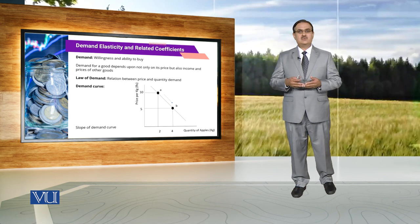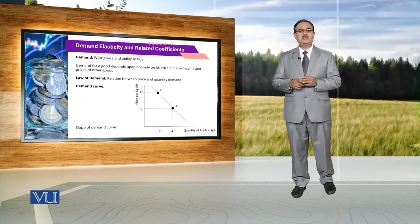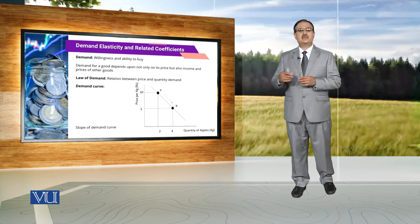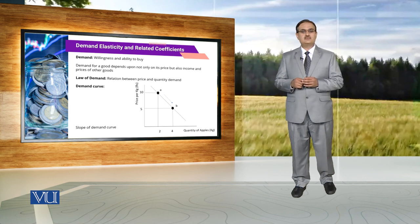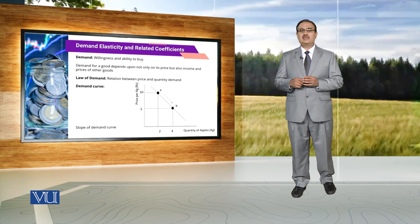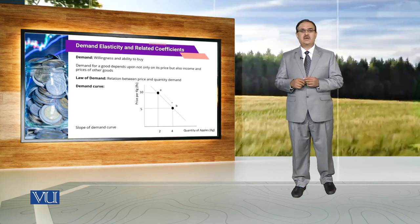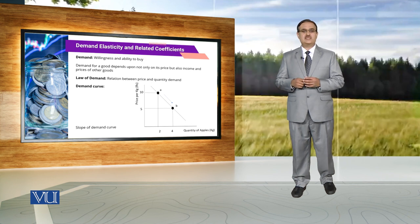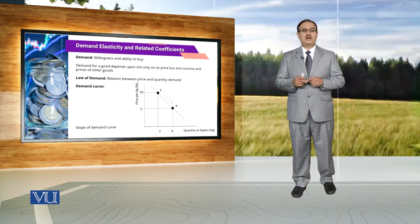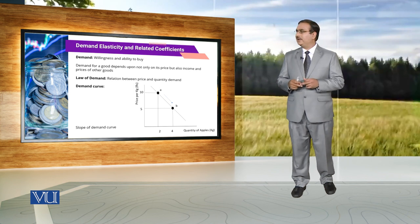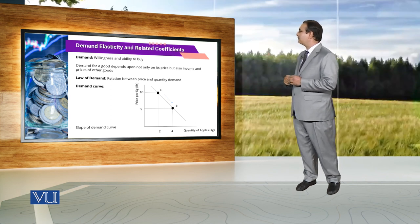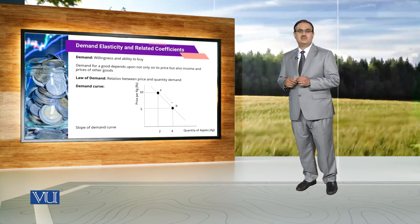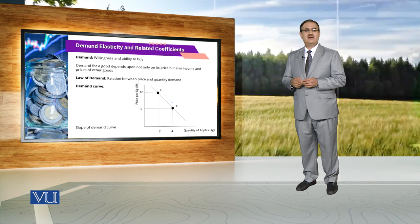In this diagram, the usual example is quantity demanded for apples and price of apples. If the price of apples is equal to 10 rupees, then demand for apples is equal to 2 kg. If the price of apples is 5 rupees, then demand for apples increases to 4 kg. This movement from point A to point B indicates an increase in quantity demanded due to a decrease in price, and the demand curve is always a negatively sloped curve.